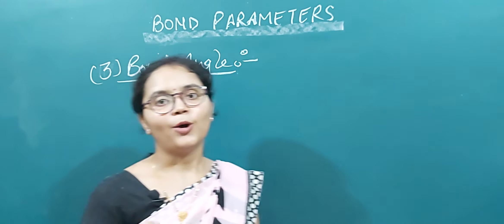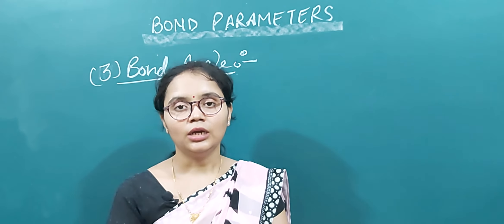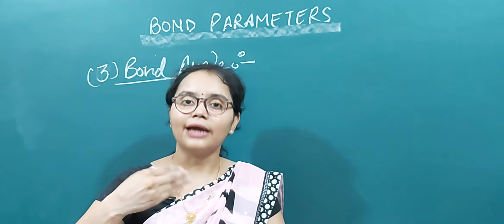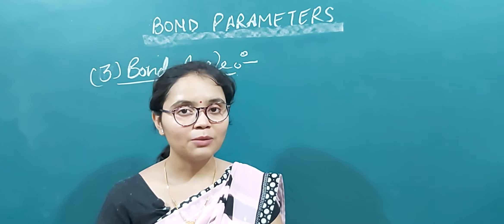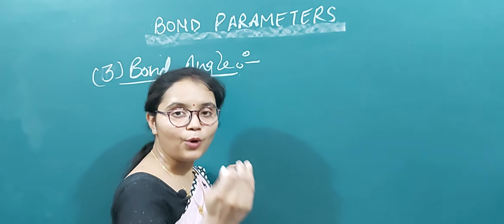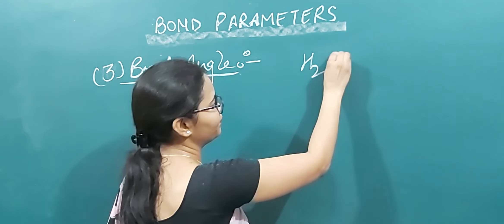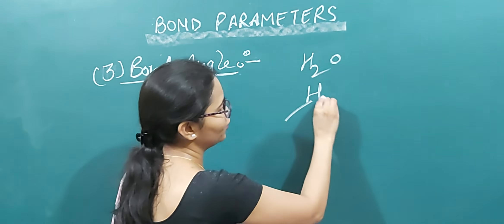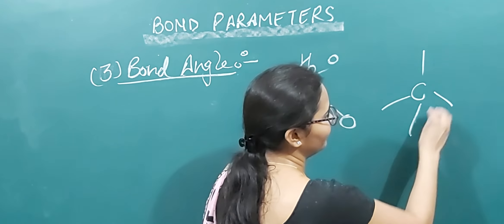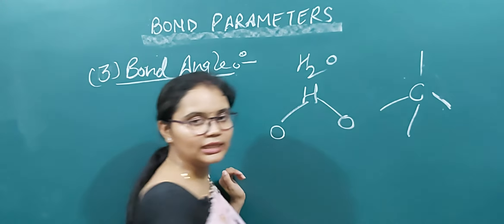Covalent bonds are directional in nature, meaning the bond forms in a particular direction in space. For example, in H2O the bond forms in a particular direction, and in methane the bond also forms in a particular direction. Because covalent bonds are directional, there is always a particular angle between two bonds in each molecule.